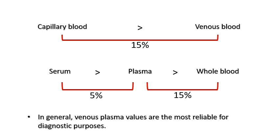Leaving serum separated from red blood cells for more than one hour can cause the RBCs to utilize glucose, so serum glucose values decrease rapidly in samples that have not been separated from the cellular constituents of the blood. In summary: whole blood is lower than plasma glucose by 15 percent, and plasma glucose is higher than serum by 5 percent. The most commonly used and most accurate blood glucose testing for diagnostic purposes is venous plasma values.